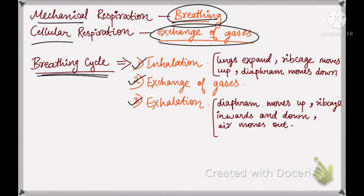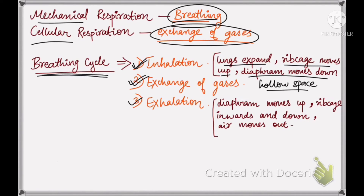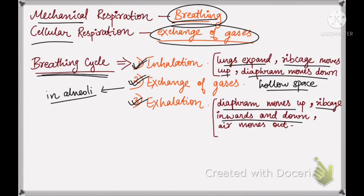The breathing cycle involves three steps. First, inhalation: our lungs expand, the ribcage moves upward and outward, and the diaphragm moves down, creating a hollow space so air naturally rushes in. Second, exchange of gases occurs in the lungs, which we'll study shortly. Third, exhalation: the diaphragm moves up, the ribcage moves inward and downward, the lungs compress, and air moves out.